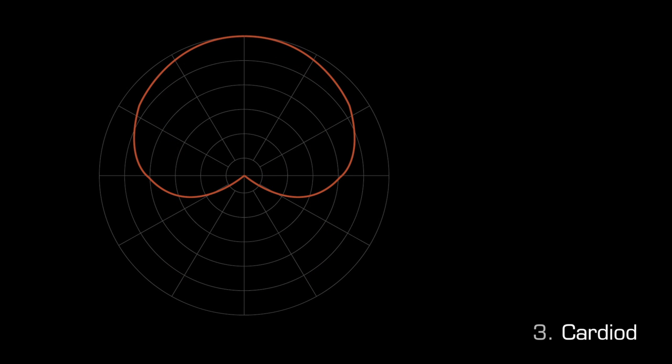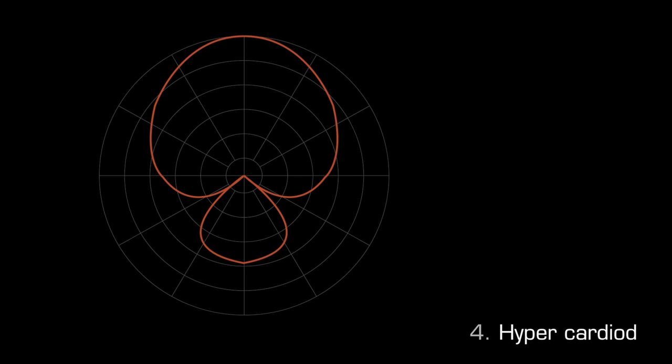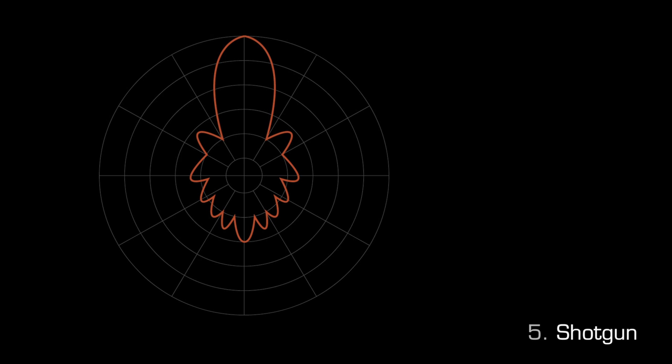The cardioid microphone is designed to be sensitive to sound arriving from a wide range of angles at the front. The hypercardioid microphone is designed to be sensitive to sound arriving from a narrower range of angles at the front. The shotgun microphone is designed to be sensitive to sound arriving from a distance at a very narrow range of angles.